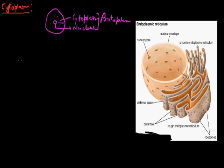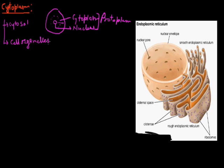In the cytoplasm, there are two types of structures present — it can be divided into two parts. The liquid which is present in the cytoplasm, we call them cytosol. And the components and structures of the cell, we call them cell organelles. Cell organelles means they are the components of the cell and they have specific functions.